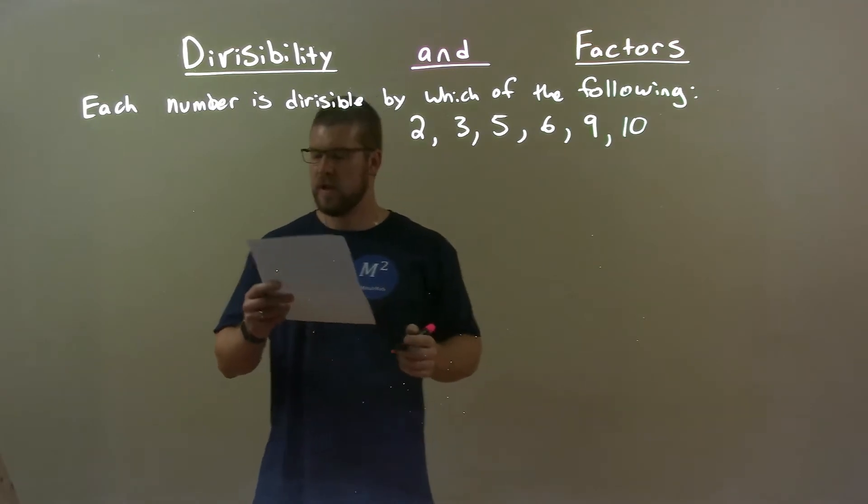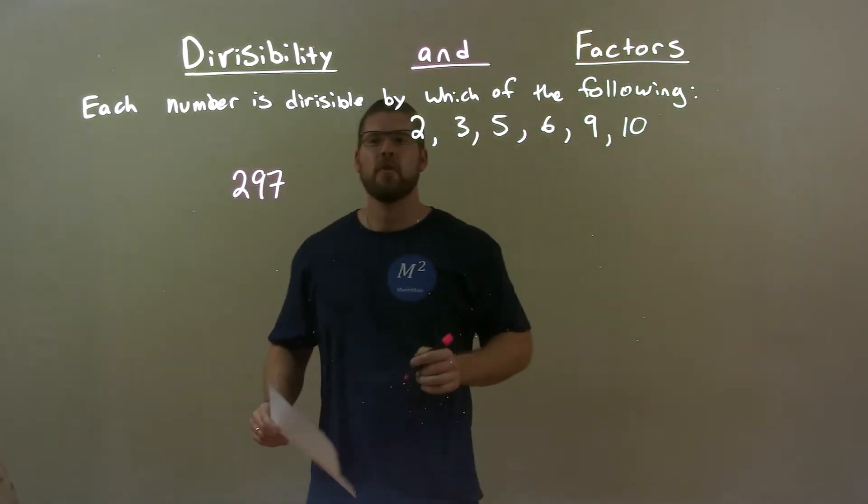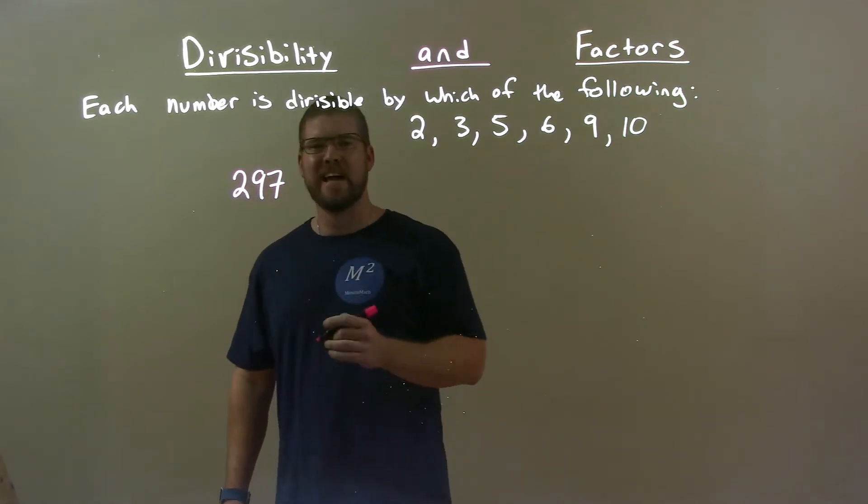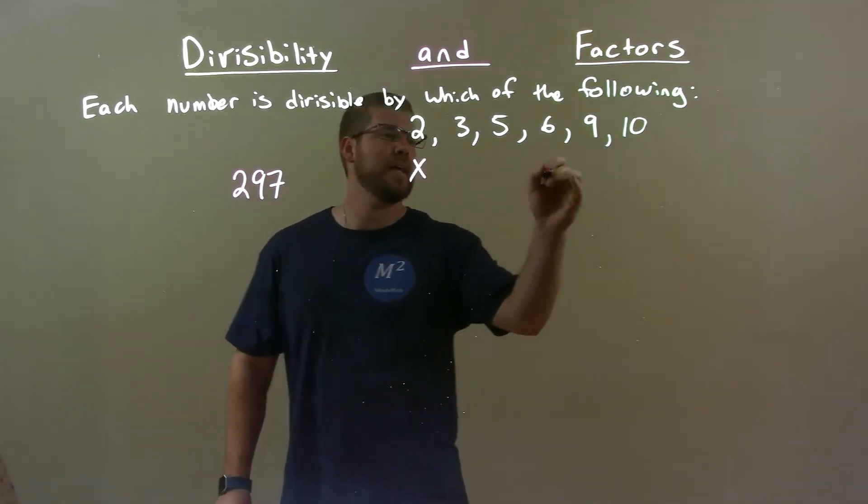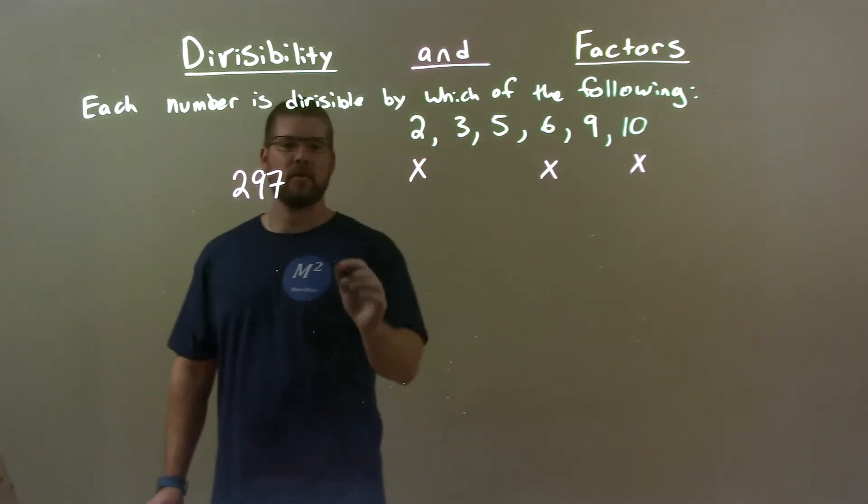If I was given this number, 297, first thing, this number is an odd number. All my even numbers are out, okay? So now let's go check 3.